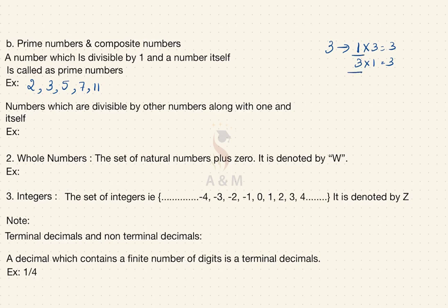Always remember: 1 is not a prime number. Second is the composite number. Numbers which are divisible by other numbers along with 1 and the number itself are composite numbers. Examples are 4, 6, 8, 9, 10, etc. Let me take 9 as an example. 9 is divisible by 1 (one 9 is 9), by itself (nine 1s are 9), and also by 3 (three 3s are 9). Therefore 9 is a composite number because it is divisible by 1, the number itself, and another number.